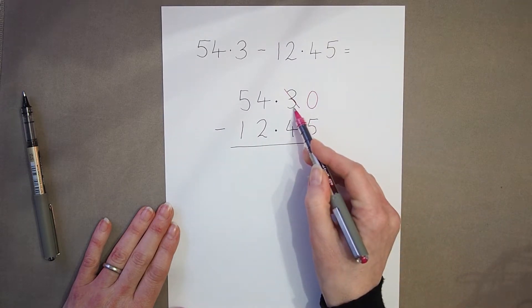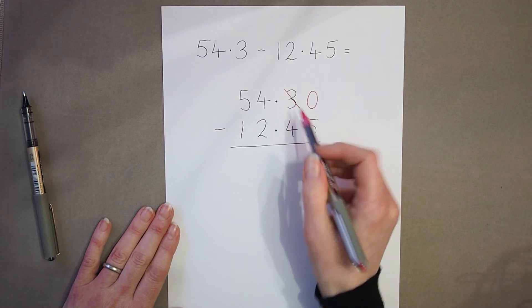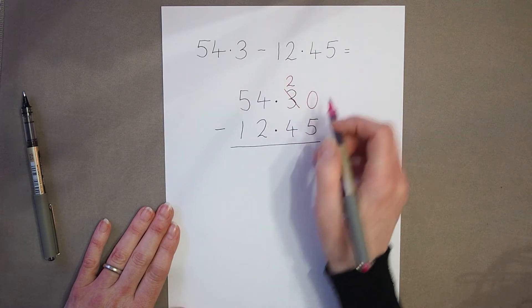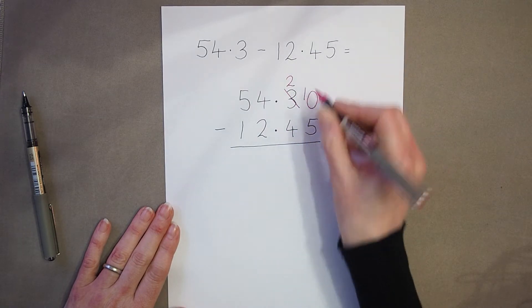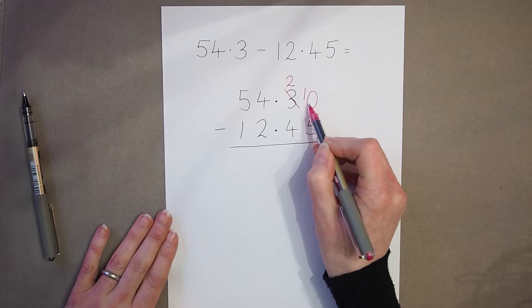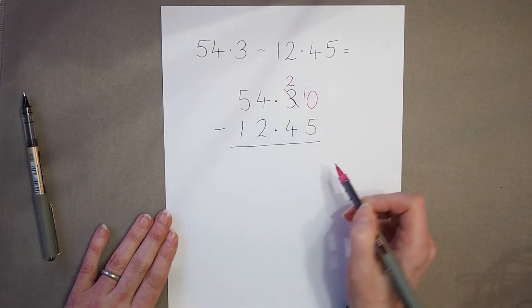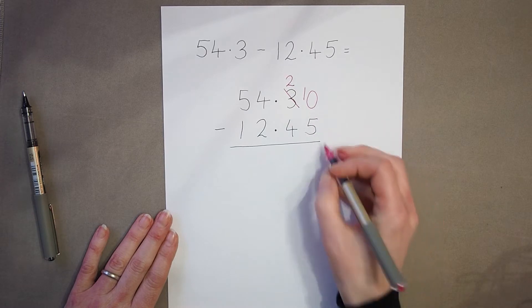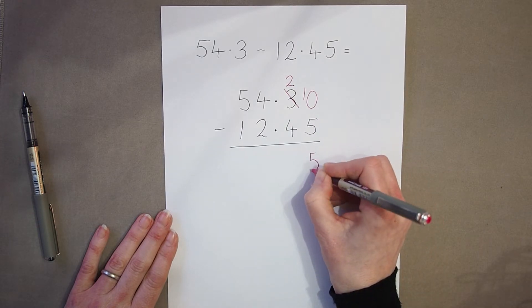I'm going to exchange one of my tenths for hundredths. So if I start with three tenths and take one out, I've got two tenths left. And I can put my tenths into the hundredths column. So now I've got ten hundredths. Ten take away five, it's five.